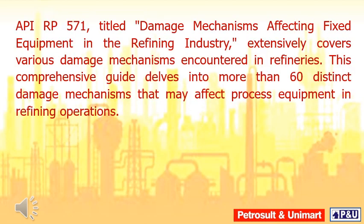API RP 571, titled Damage Mechanisms Affecting Fixed Equipment in the Refining Industry, extensively covers various damage mechanisms encountered in refineries. This comprehensive guide delves into more than 60 distinct damage mechanisms that may affect process equipment in refining operations.